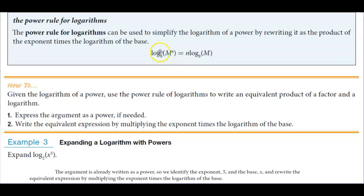So here we have the logarithm of base b of M to the power of n, and n being the power. Now we can rewrite this as n times the logarithm of base b of M.